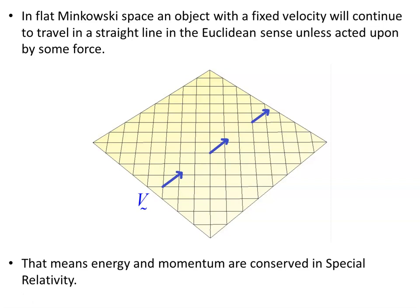In flat Minkowski space, an object with a fixed velocity will continue to travel in a straight line in the Euclidean sense unless acted upon by some force. So in flat space, represented here by this two-dimensional surface — you can imagine the three dimensions yourself — unless some force acts to change the velocity of an object, it will just continue in the same straight line in a Euclidean sense.